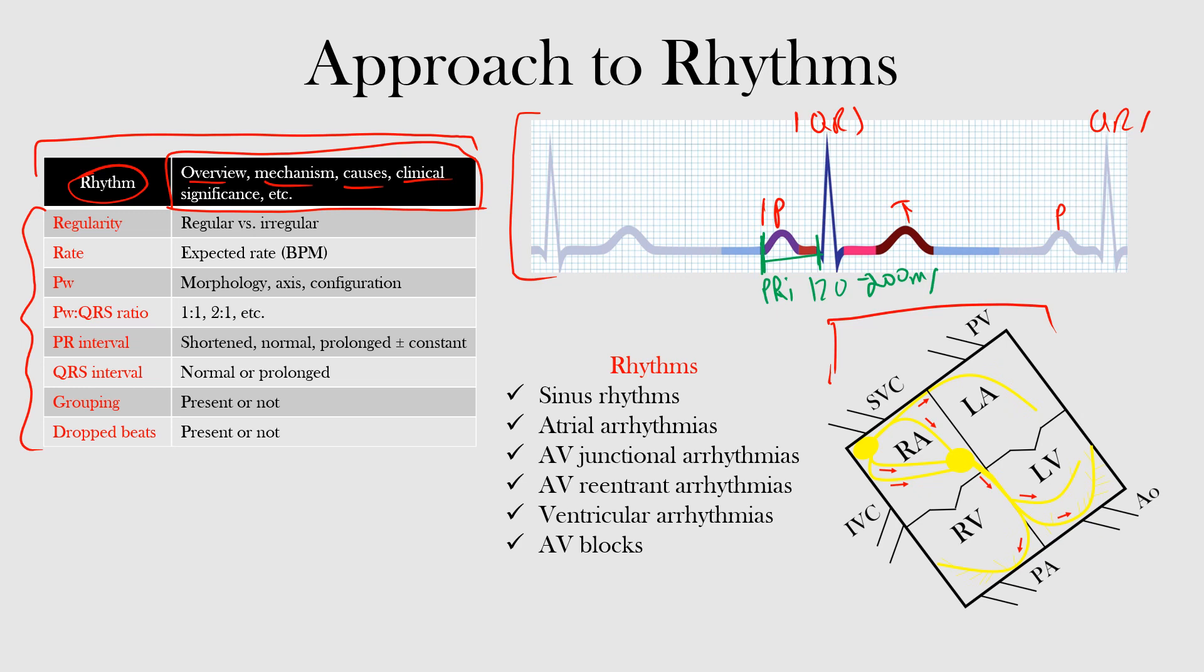We'll look at the QRS interval, from the beginning of our QRS complex to the end of it. Is it prolonged, is it normal? Remember the QRS interval in adults should be between 70 and 110 milliseconds, which is about two to three small boxes.